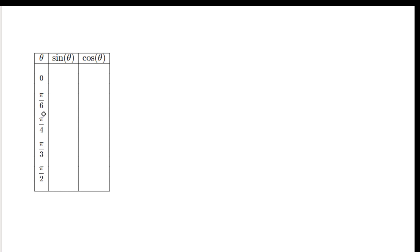For sine, it goes: square root of 0 over 2, square root of 1 over 2, square root of 2 over 2, square root of 3 over 2, square root of 4 over 2. The first one is 0, the second one is 1/2, and the last one is 1.